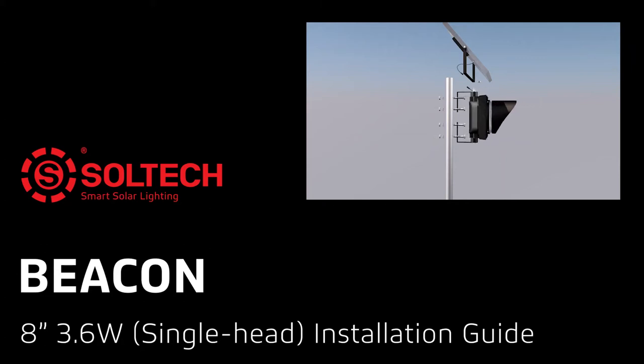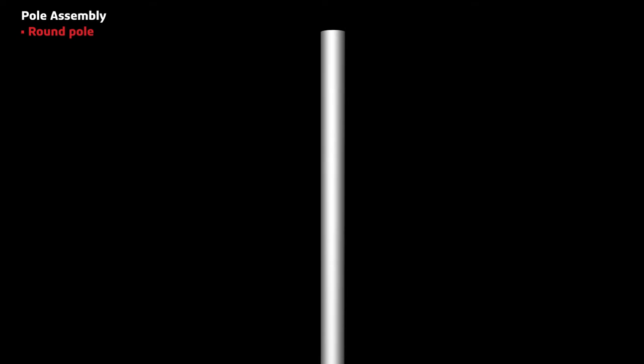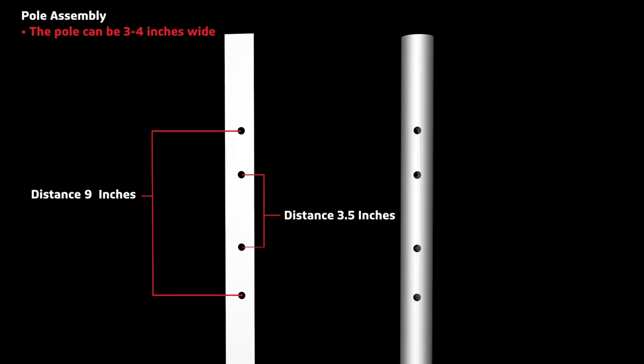Welcome to the beacon installation guide video. The beacon can mount to a square pole and a round pole. The pole can be three to four inches wide.